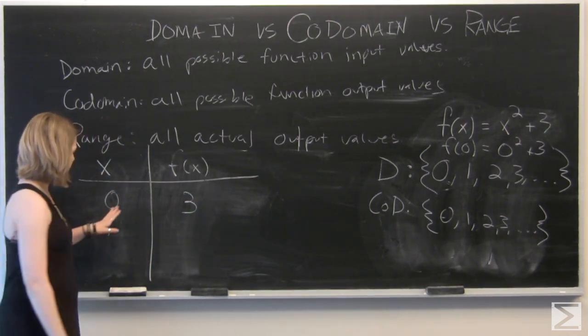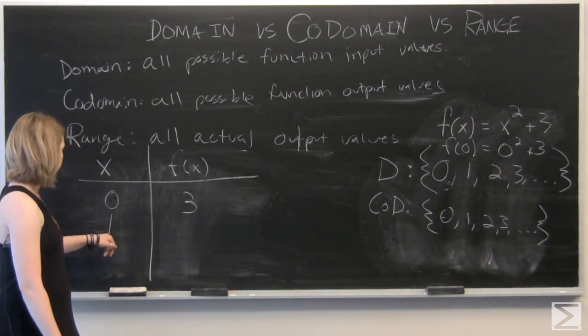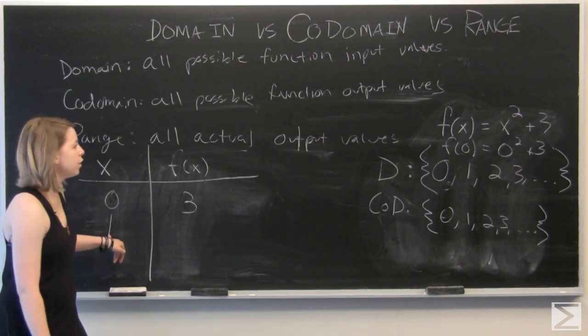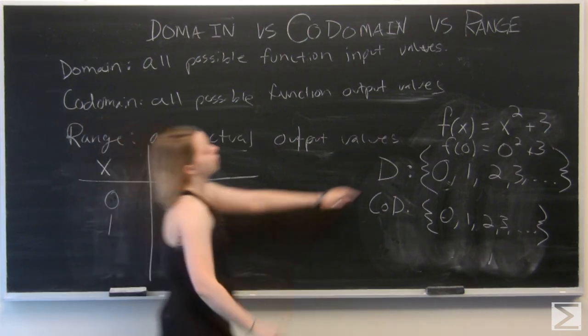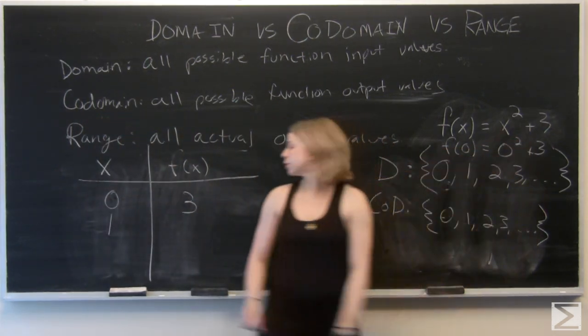And we can continue on. Our output for when our x value is 1 will be 1 squared plus 3, which is 4.